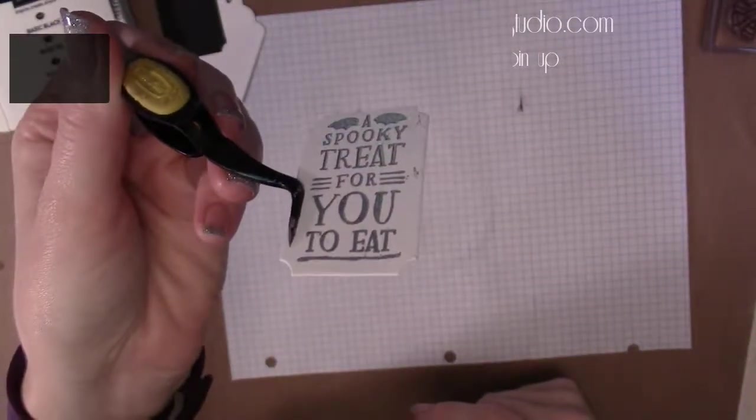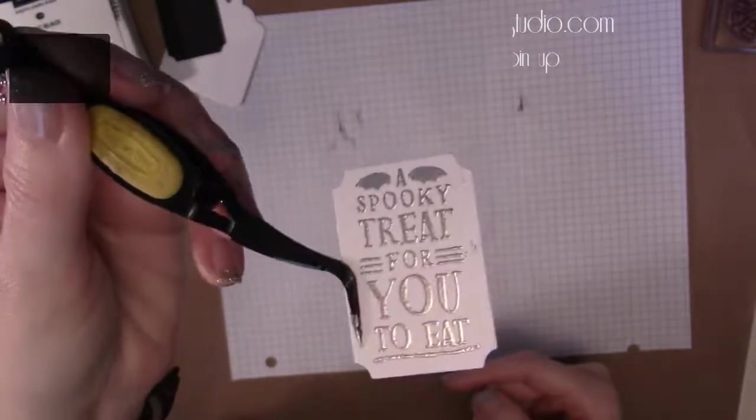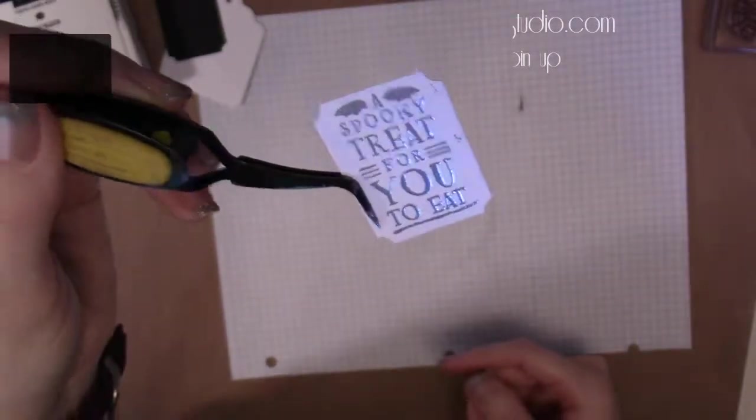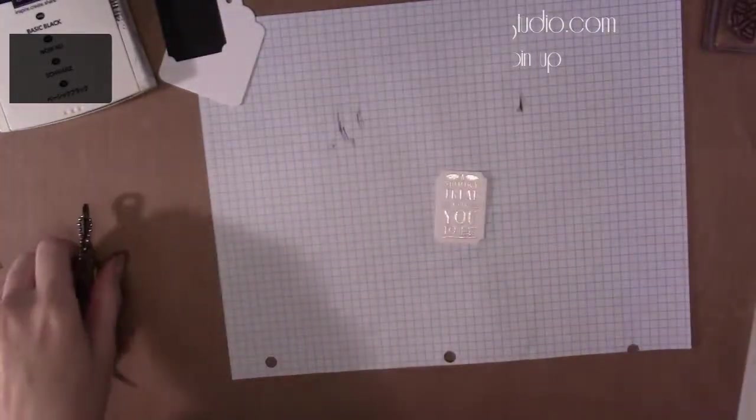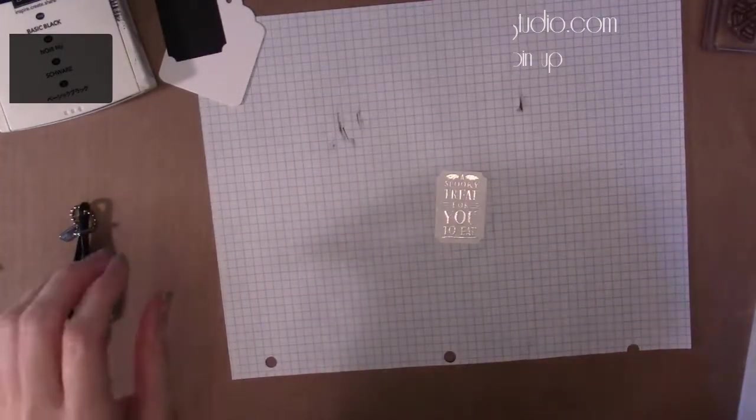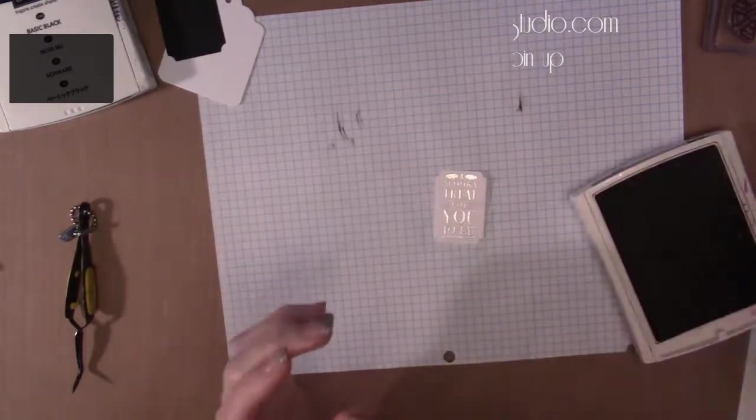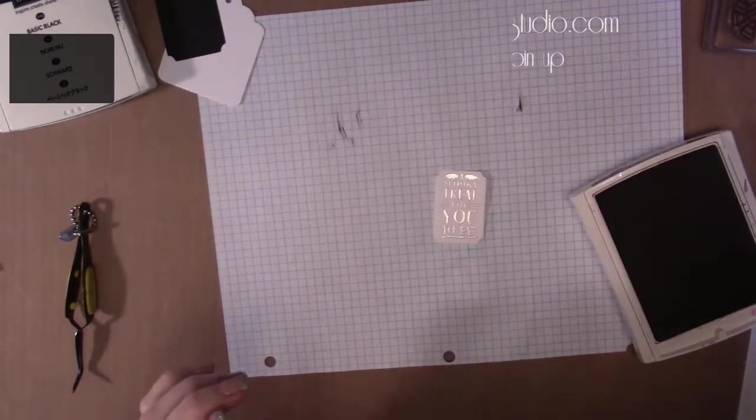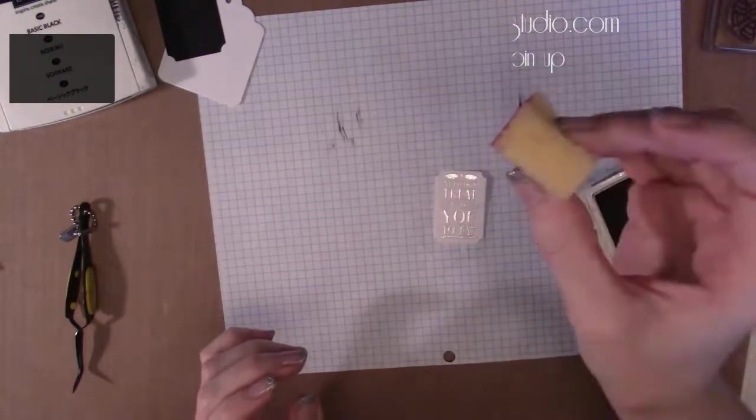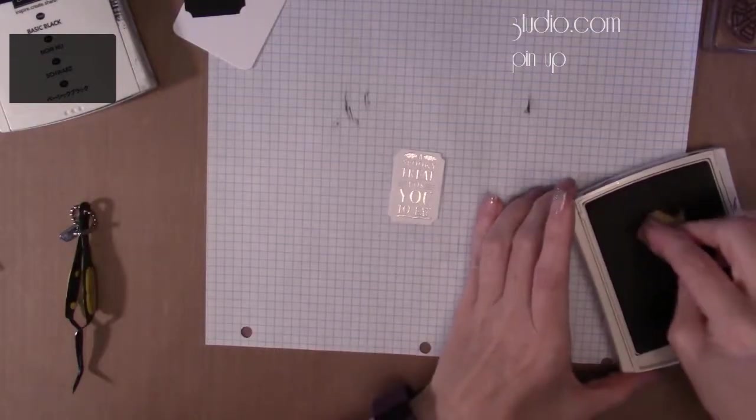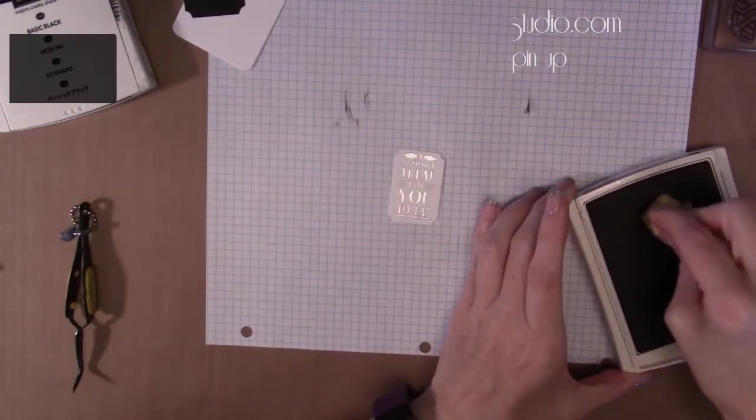Here is our little embossed image. Now this step is optional, you can just stamp it with regular ink, but I just think it gives it that extra something. We are also going to need a Rich Razzleberry ink pad because I actually sponged around this, so a little piece of the Stampin Up sponge and your pad.